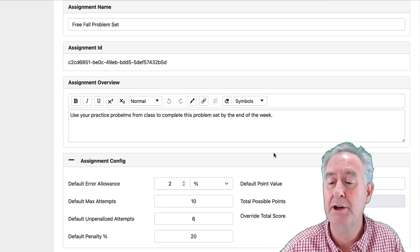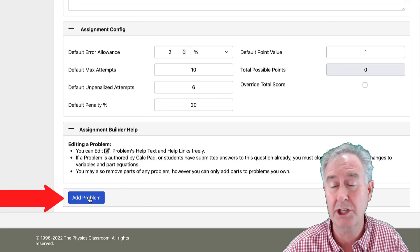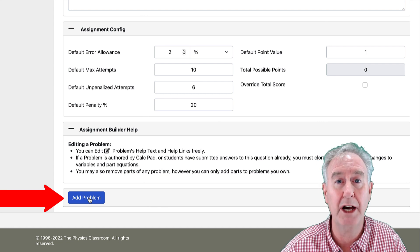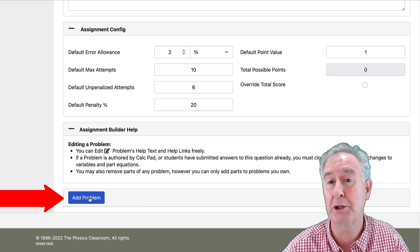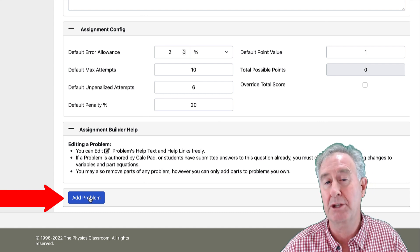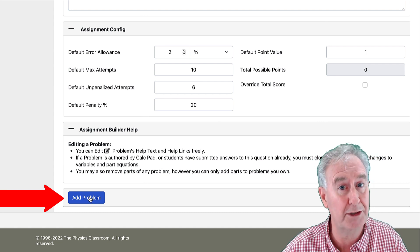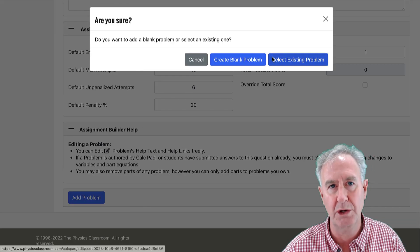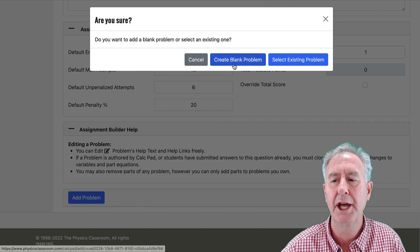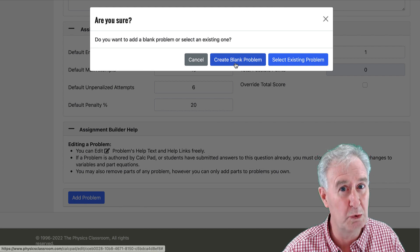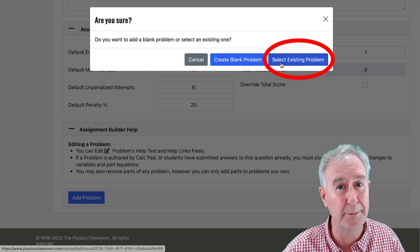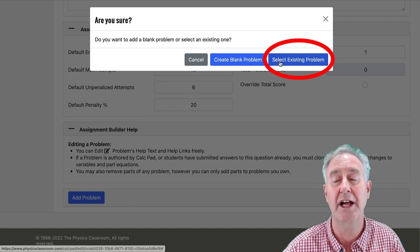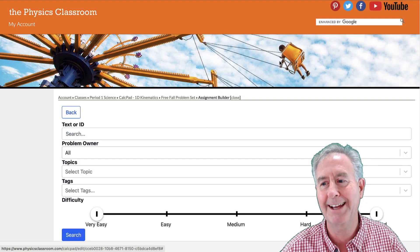So if I scroll down, I notice at the bottom there's no problems, but there is an Add Problem button. And this blue Add Problem button shows up when there's no problems. Once you have a problem in your problem set, that problem has a plus button on it, and you use the plus button to add a problem. So I'm going to click on the Add Problem, and this shows up, and I have a decision to make. Create a blank problem, meaning you write the problem, or select an existing problem, perhaps one you've written, or one that we have written, the physics classroom. So I'm going to select Existing Problem.